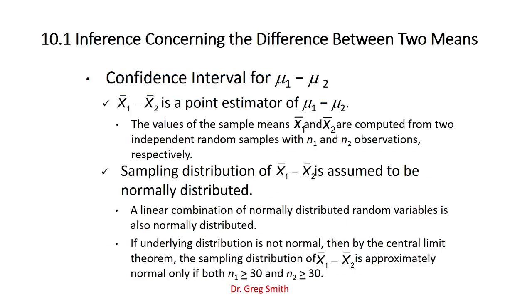We're going to look at the difference between mu1 and mu2 — are they the same, is one greater than the other, or is one less than the other? When we draw the samples, x-bar1 versus mu1 and x-bar2 versus mu2, their difference is the point estimate for the difference between the populations. This makes a lot of sense, as these statistics are trying to tell the story of these parameters.